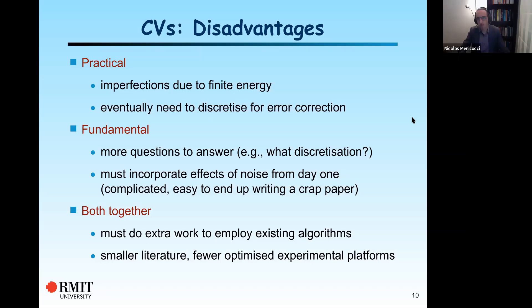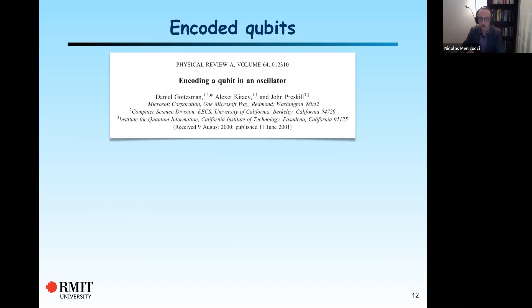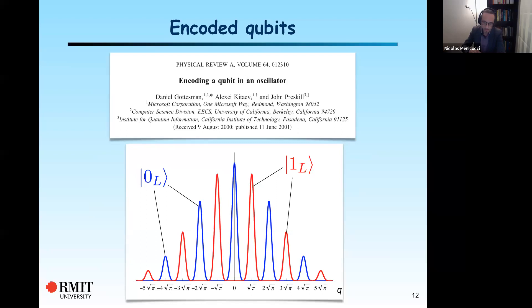Let's talk about fault tolerance. I mentioned that you need to discretize for error correction, and the point of error correction is eventually to be tolerant of faults. In 2001, there's the now-famous paper 'Encoding a qubit in an oscillator' by Gottesman, Kitaev, and Preskill. And there was at least one talk about this — Krishna's talk. Christian introduced these states, but I'm going to reintroduce them pictorially. So the GKP encoding: this is an approximate GKP state. The blue part is the logical zero and the red part is the logical one.